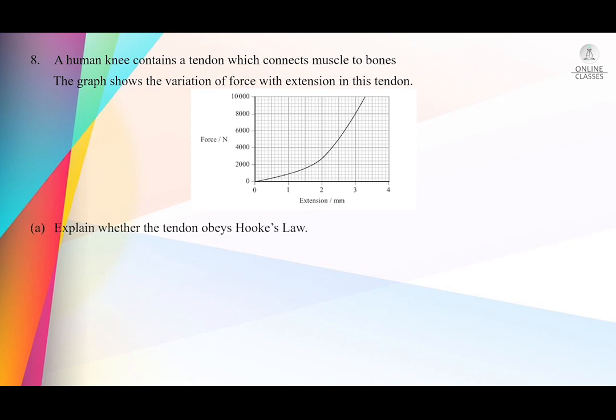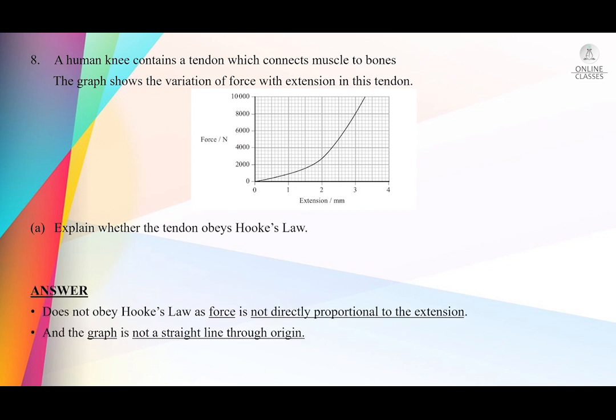Question number 8: a human knee contains a tendon which connects muscles to bones. The graph shows the variation of force with extension in the tendon. As force increases, extension also increases. Explain whether the tendon obeys Hooke's law. You can see that the graph is not a straight line through the origin, so it does not obey Hooke's law. The answer: does not obey Hooke's law as force is not directly proportional to extension. Since it is a two-mark question, explain Hooke's law and state that the graph is not a straight line through the origin.